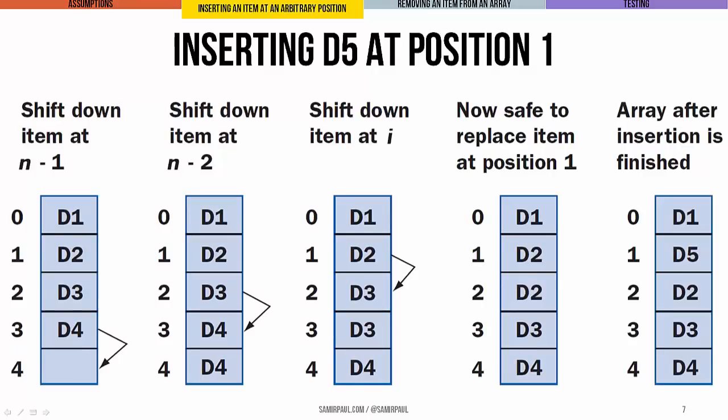You can see what this looks like here. If we start with this array of logical size four, physical size five, we go from the target index - if we're trying to insert something at position one - and rather than starting at the target index, we're going to start at the logical end of the array and shift things down.